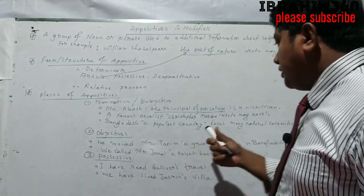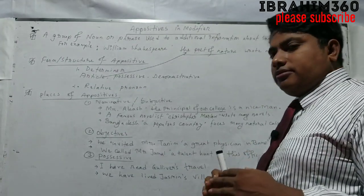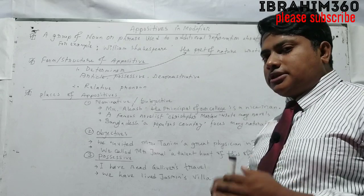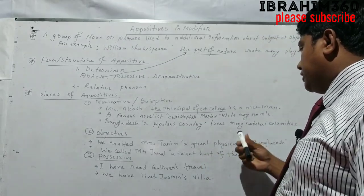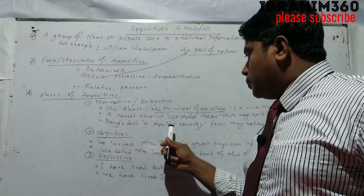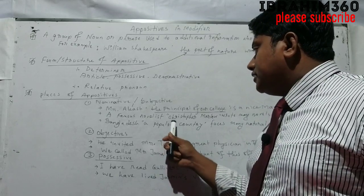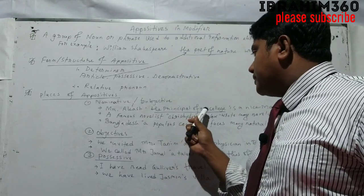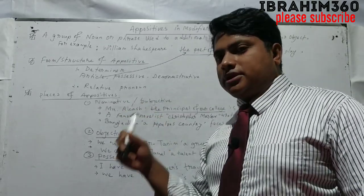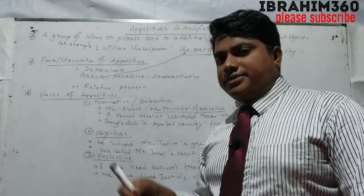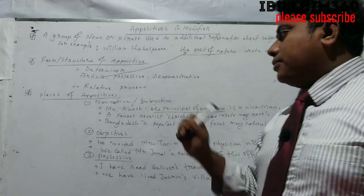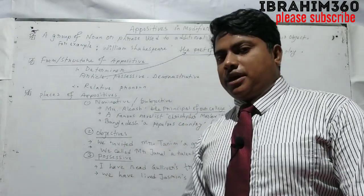Bangladesh is a popular country — here 'a popular country' gives extra information about Bangladesh, and it faces many natural calamities. Christopher Marlowe and 'the principal of our college' are used as nominative appositives — that is, the appositive is in the subject case. So these are nominative appositives. Then we move to objective appositives.